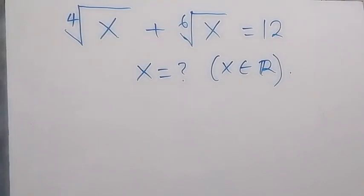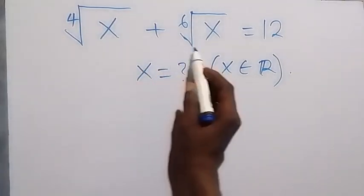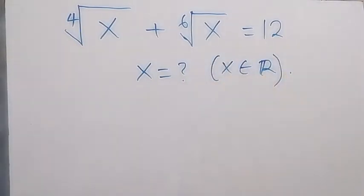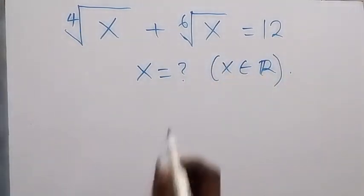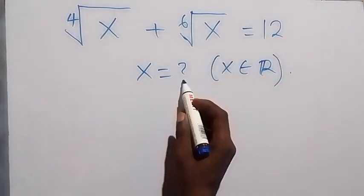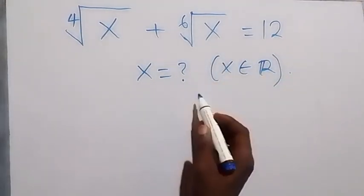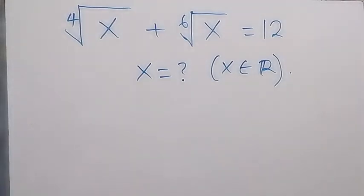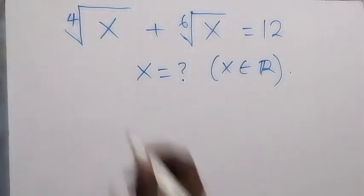We have the 4th root of x plus the 6th root of x equals 12, and we want to find the value of x such that x is a member of the real numbers.